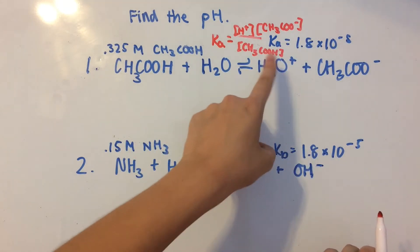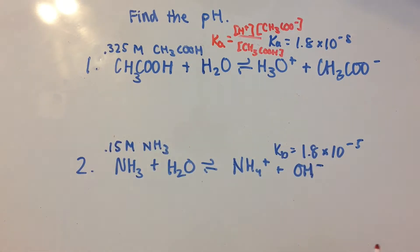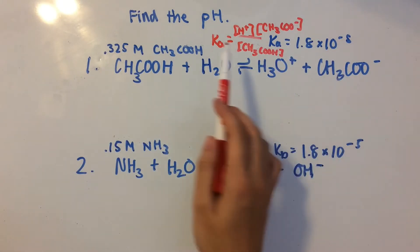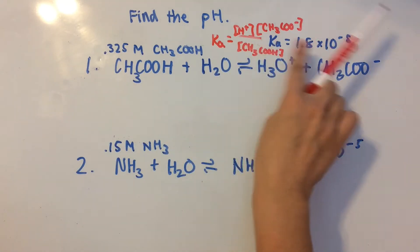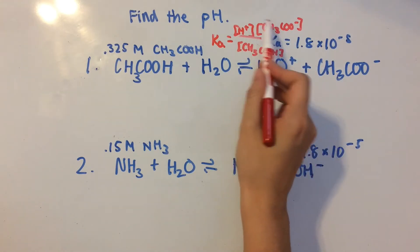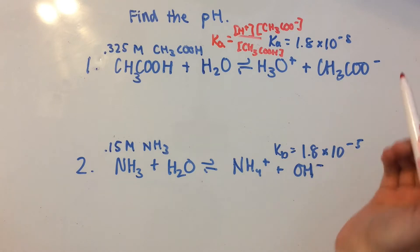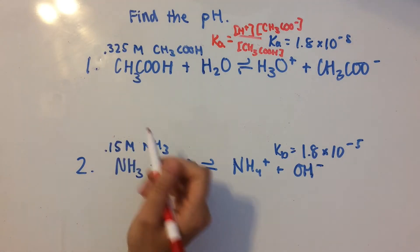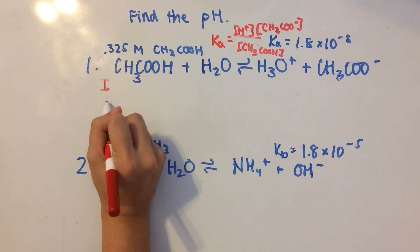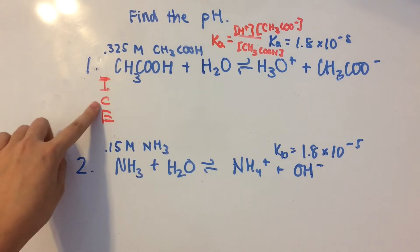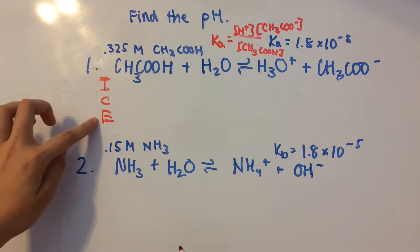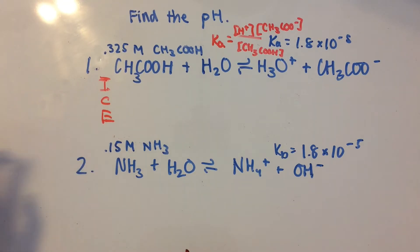So we're also given that Ka equals 1.8 times 10 to the negative 5. So we can set these two things equal to each other, which means that this whole equilibrium expression equals 1.8 times 10 to the negative 5. Now let's set up an ice chart. I stands for initial concentration, C stands for change, E stands for equilibrium concentration.